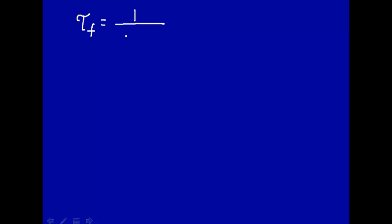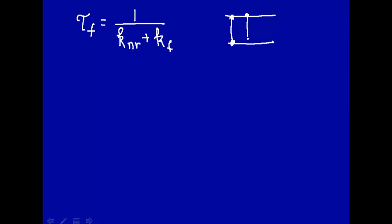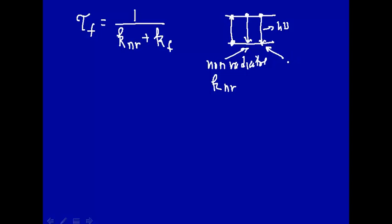Drawing on your experience in introductory chemistry for kinetics, the fluorescence lifetime is defined as the rate constant for non-radiative decay plus the rate constant for fluorescence. Consider a molecule going up to the excited state — it can decay by two general processes: a non-radiative decay and a radiative decay, where a photon comes out as fluorescence.